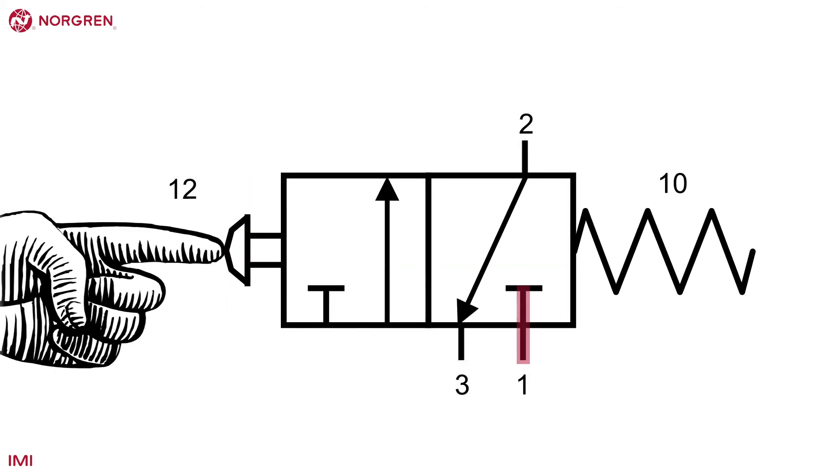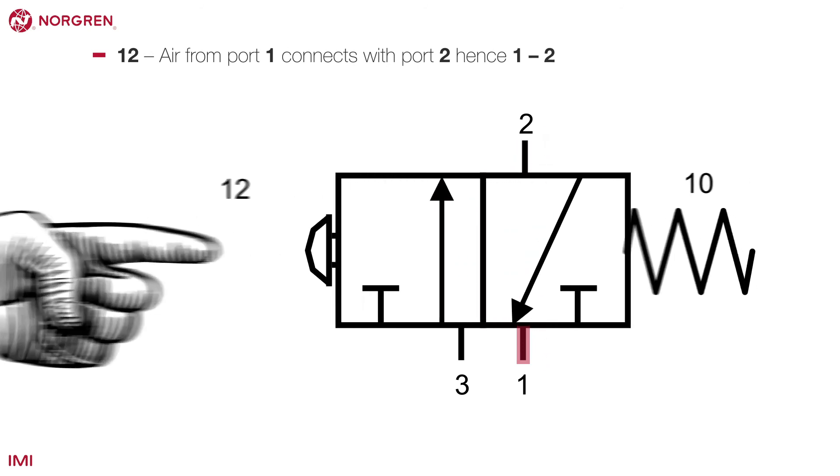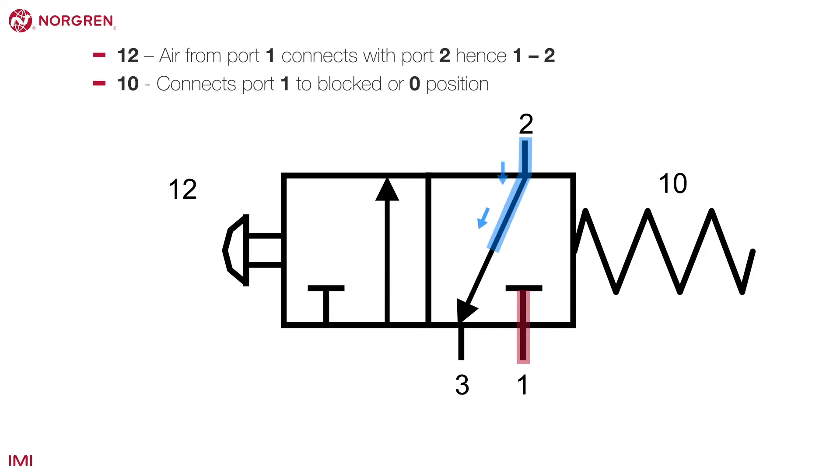This valve also has 1-2 and 1-0 positions. However, when in the 1-0 position, the air from port 2 is vented through port 3.